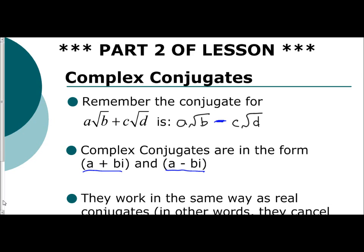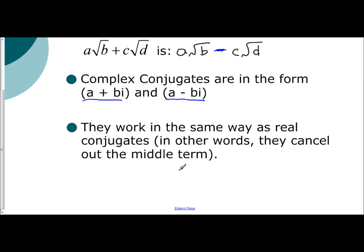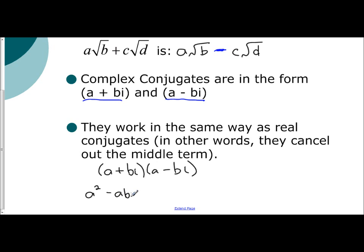You may ask what's the reason for this. What happens is if you multiply a complex conjugate together, you are going to get a unique answer. Let's take a look. If we multiply A plus Bi times A minus Bi, you would distribute. A times A is A squared. A times negative Bi is negative ABi. A times positive Bi is positive ABi.